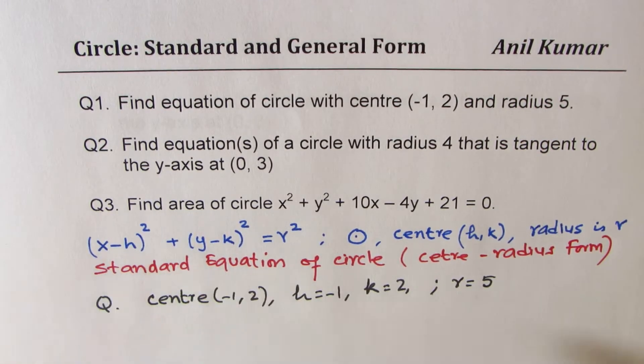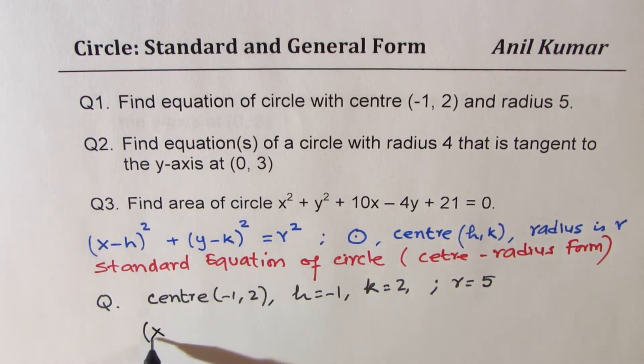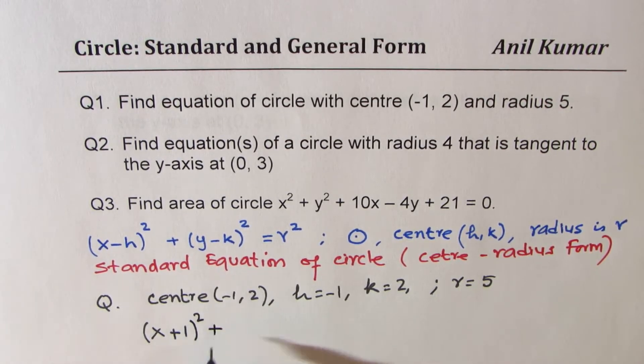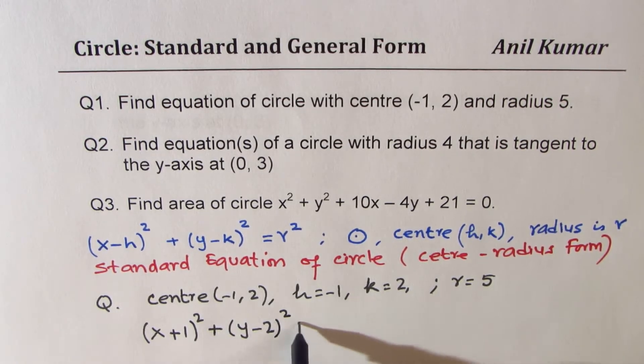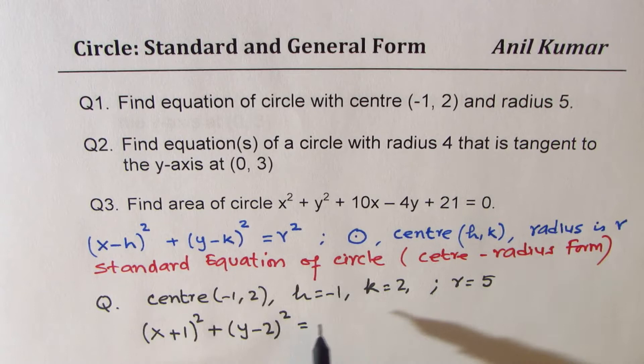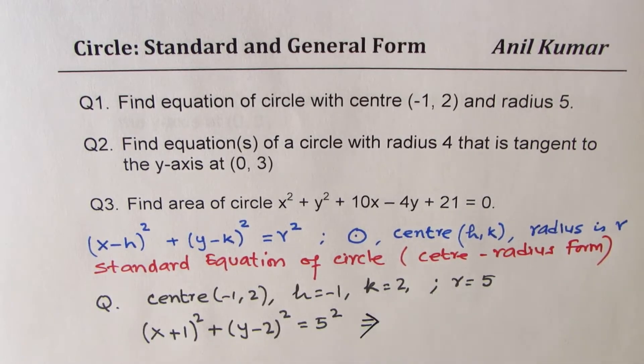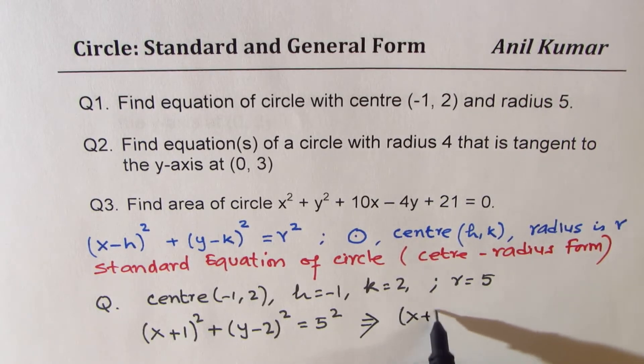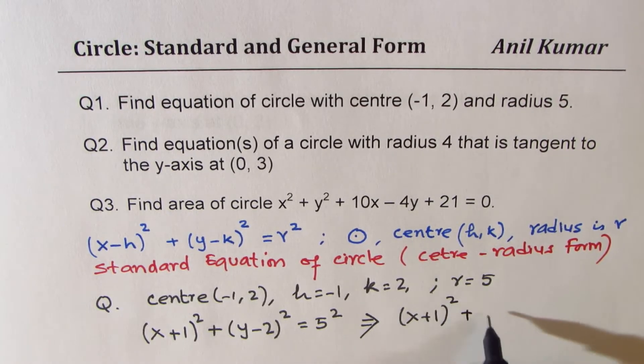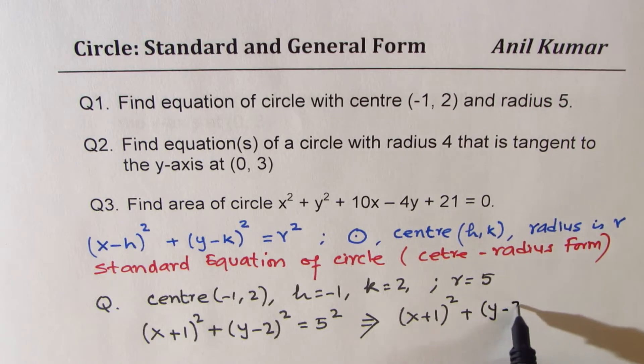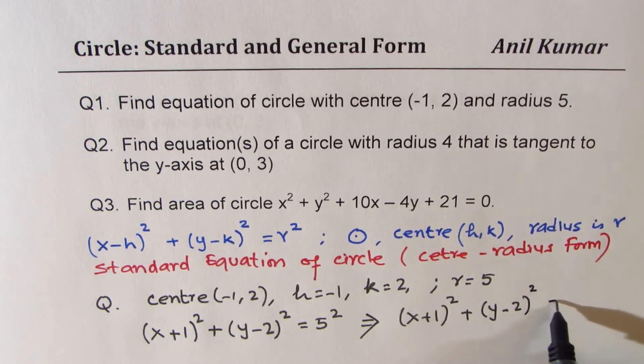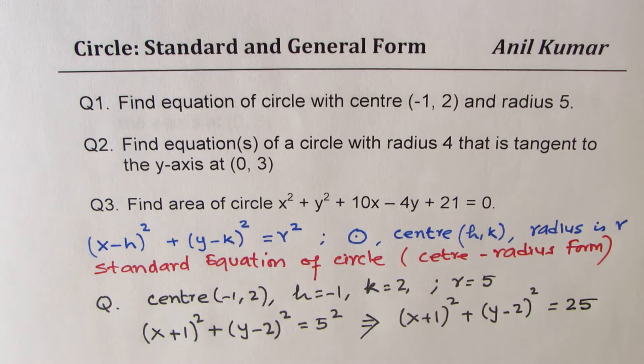So we'll just substitute the value in the equation. We get (x - (-1))² + (y - 2)² = 5². So that gives you the answer as (x + 1)² + (y - 2)² = 25. So that is the solution of the very first question.